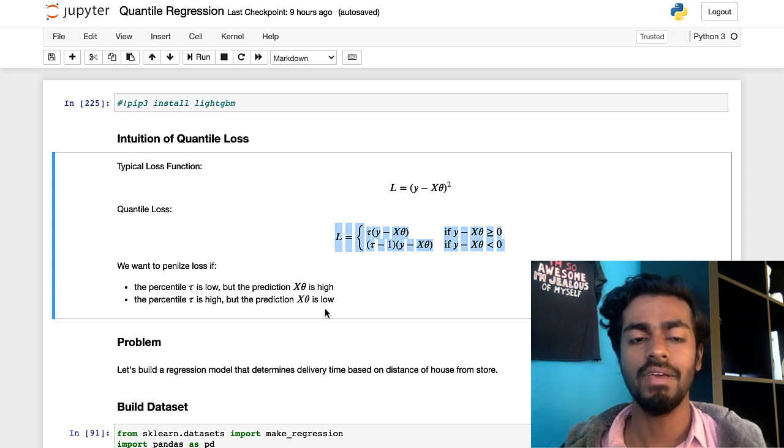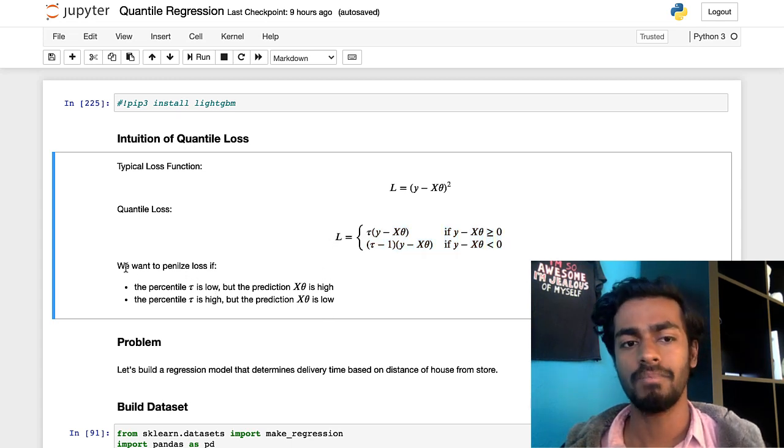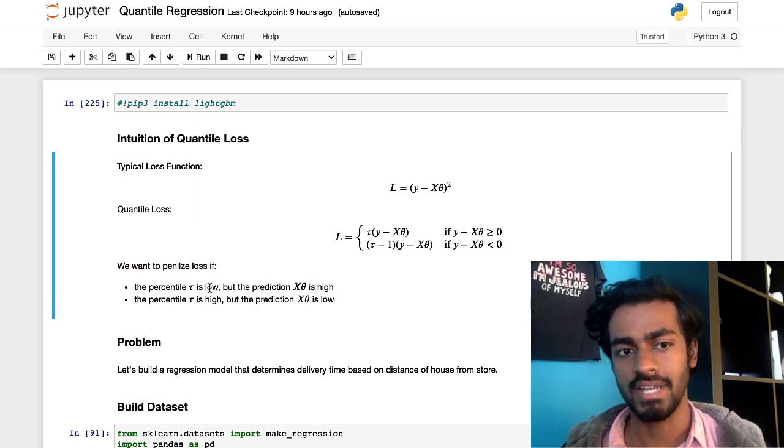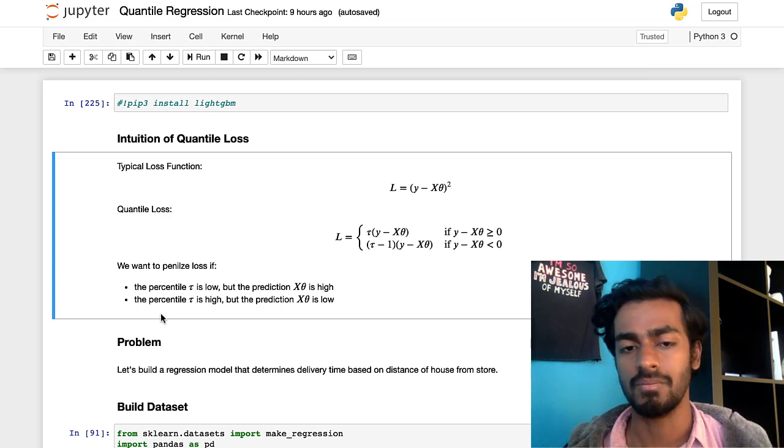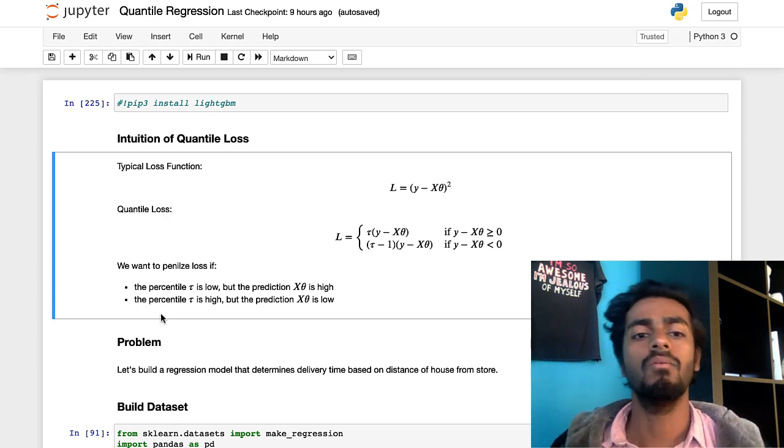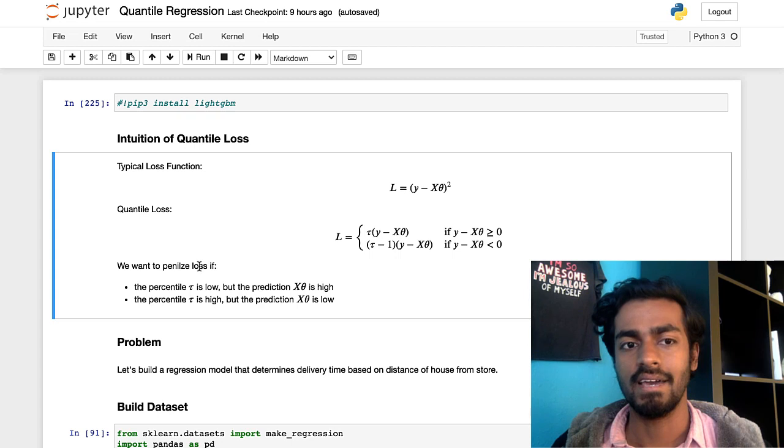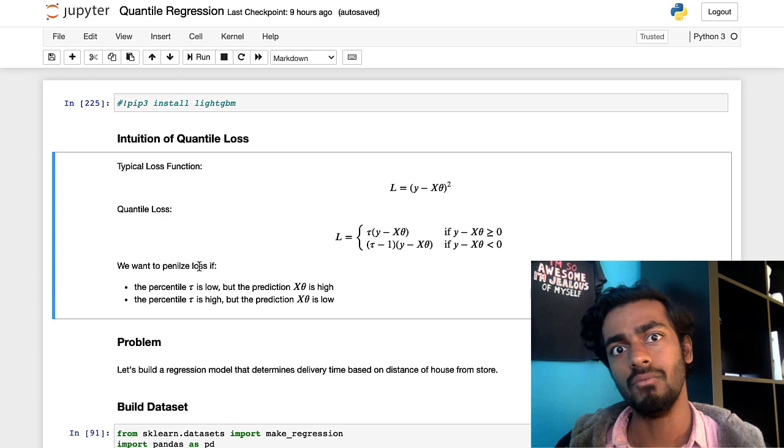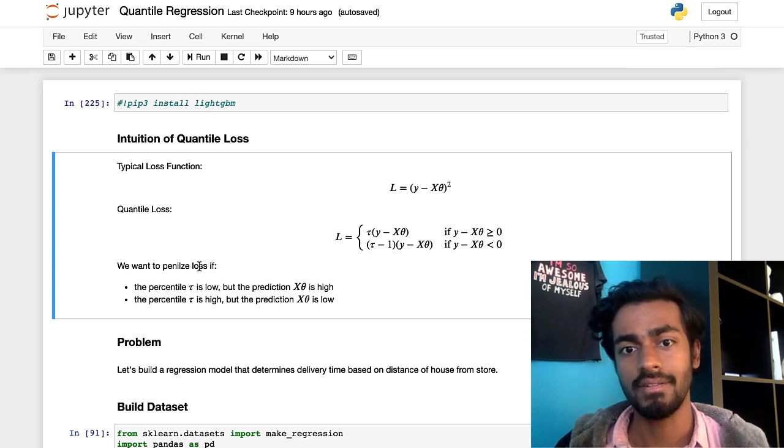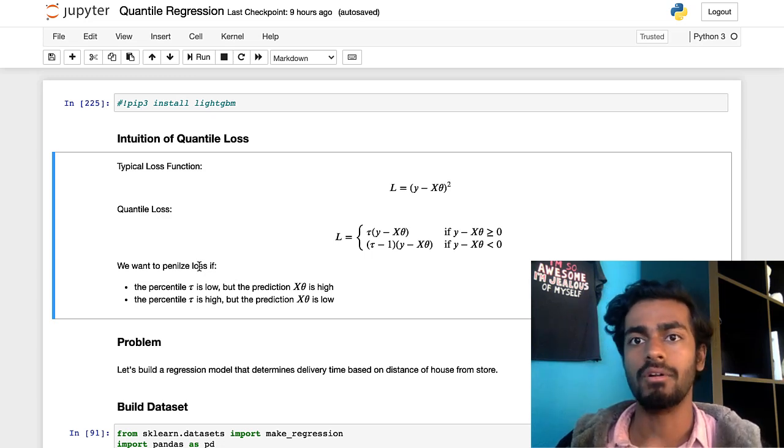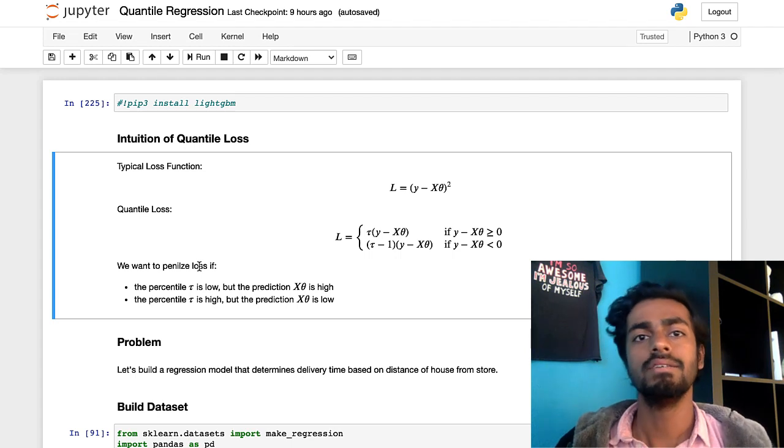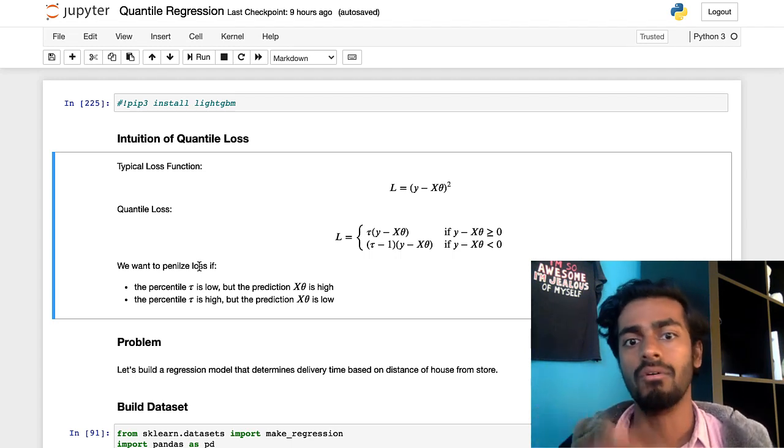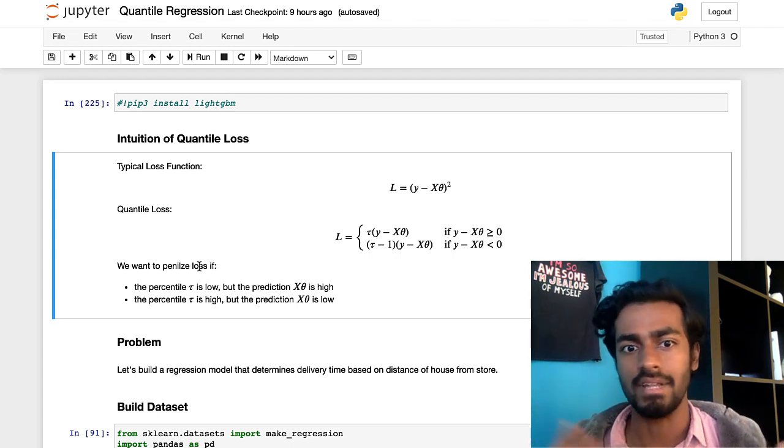Now if we want to let's say we want to penalize our loss if the percentile is low but the prediction is high and then we also want to penalize loss if the percentile is high but the prediction is low. So what we mean here is with quantile loss we are predicting a percentile within which we are sure that the order would be satisfied. So let's say this is like the upper bound or the lower bound or some bound in that case.